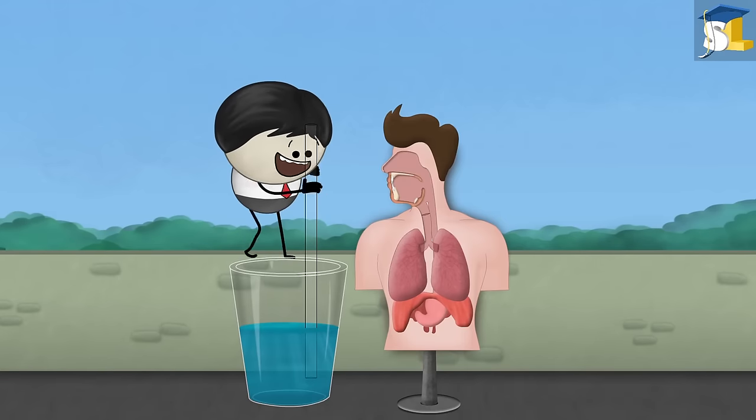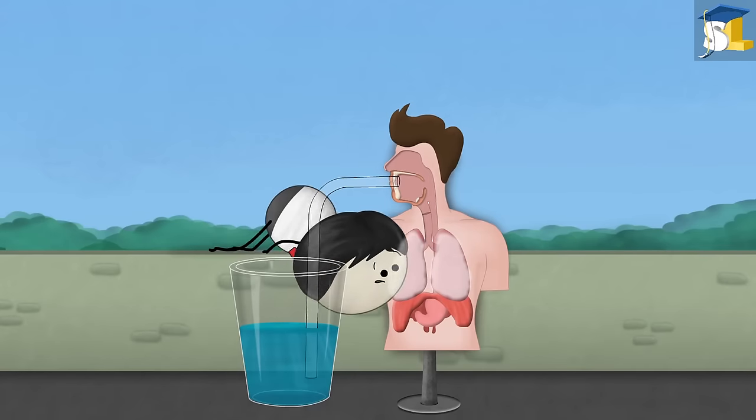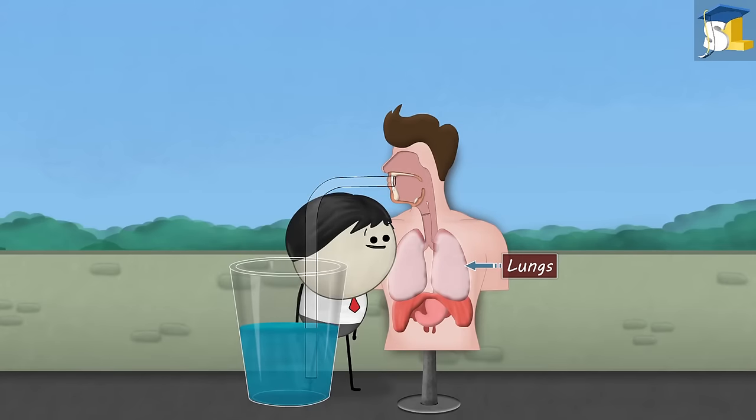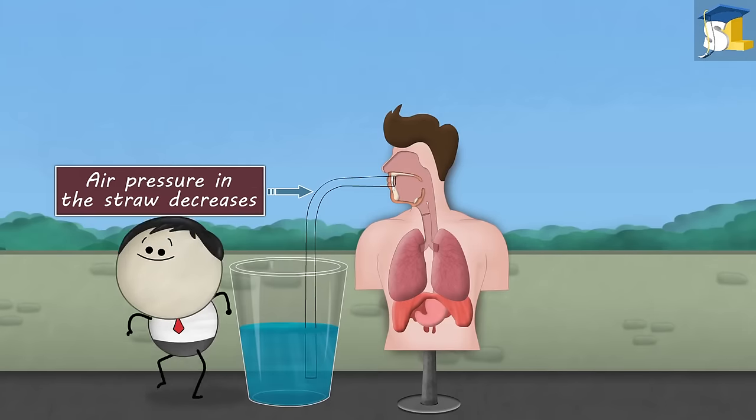However, when we drink the liquid through a straw, we first inhale, causing the air from the straw to flow into our lungs. Now, due to the absence of air, the air pressure in the straw decreases.